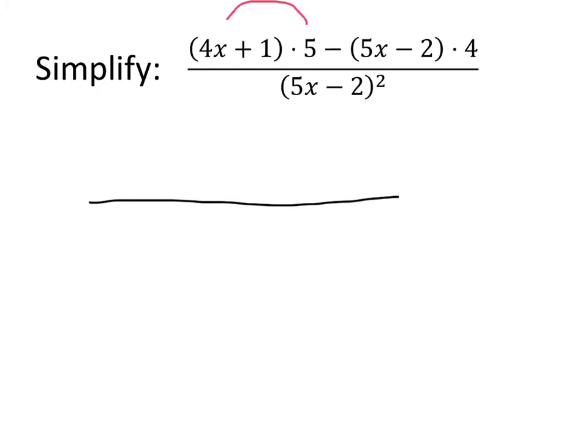We've got 4x plus 1 times 5, so we're going to distribute the 5 times both of the things in the parentheses. 5 times 4x is 20x, and 5 times 1 is 5.